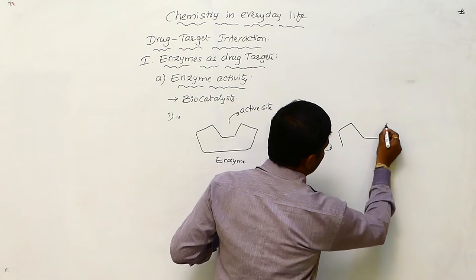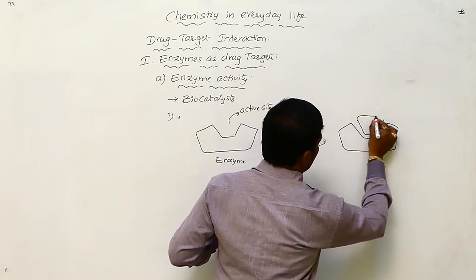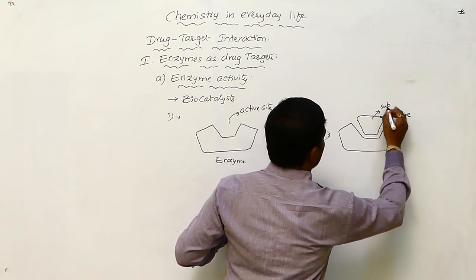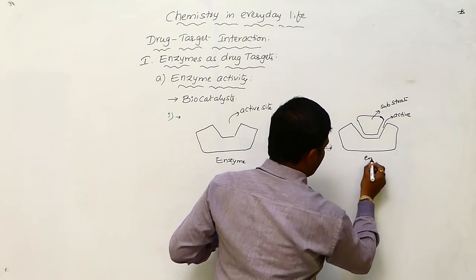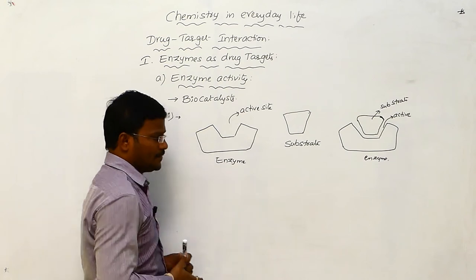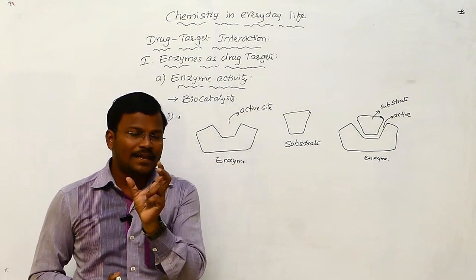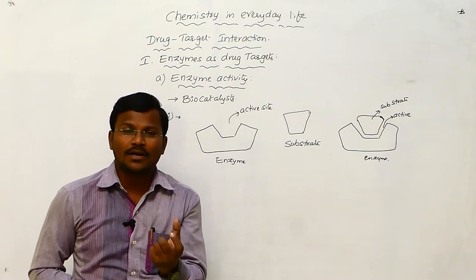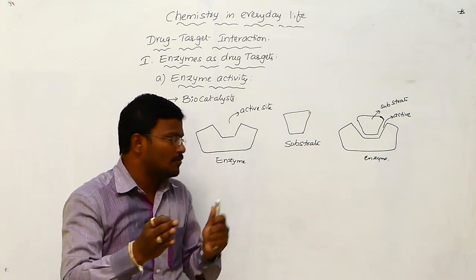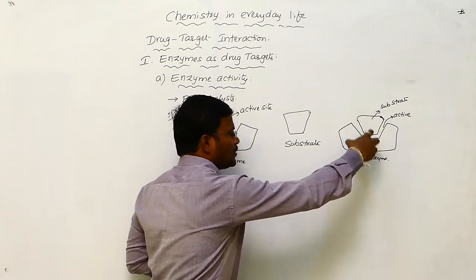Due to structural similarity between the active site of the enzyme and the substrate molecule, the substrate easily enters the active site. The active site consists of various functional groups that attract the substrate molecule, and the suitable substrate is attracted and binds with the active site of the enzyme.